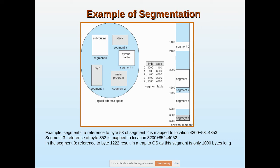Segment 1 has a base address of 6300 and a limit of 400, extending to 6700. You can calculate the addresses for other segments similarly.